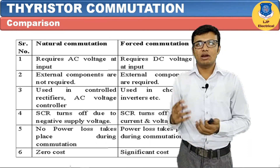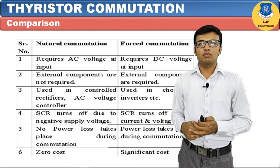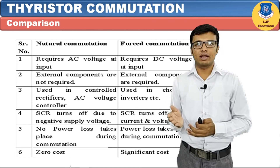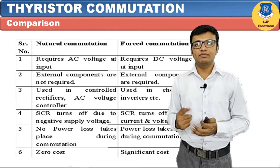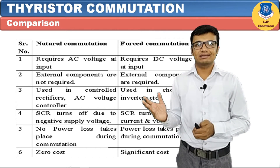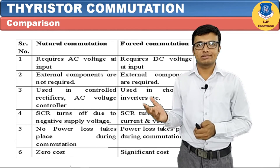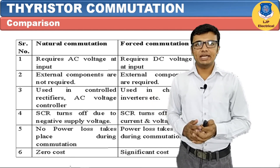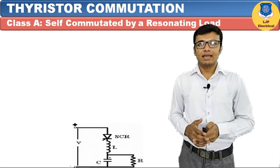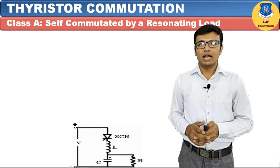Fourth, in natural commutation the SCR turns off due to negative supply voltage, whereas in forced commutation the SCR turns off by reducing anode current below holding current or by applying reverse voltage. Fifth, in natural commutation there is no power loss during commutation, whereas in forced commutation there is power loss in the R component. Natural commutation has zero cost whereas forced commutation has a significant cost.